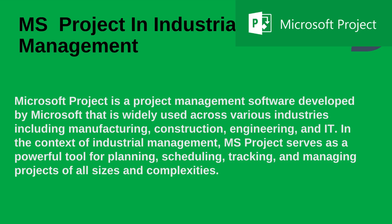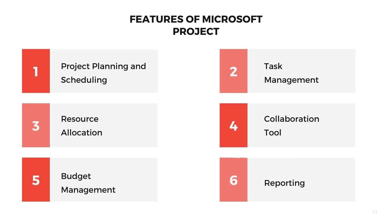One of the key functionalities of Microsoft Project is resource management. Project managers can assign resources to tasks, track resource availability, and manage resource allocation across multiple projects. By optimizing resource utilization and avoiding over-allocation, Microsoft Project helps ensure that projects are completed on time and within budget. Furthermore, Microsoft Project facilitates progress tracking and monitoring through task tracking, status updates, and progress reports, helping project managers identify potential issues or delays and take corrective actions.